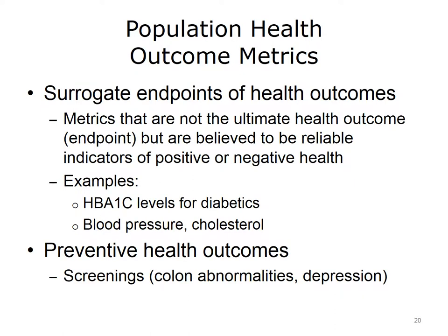A big issue with population health outcome metrics relates to the idea of surrogate endpoints of the ideal health outcomes. Surrogate endpoints are metrics that are not the ultimate health outcome or endpoint, but are believed or shown through evidence to be reliable indicators of positive or negative health outcomes. Some examples include the HbA1c level for diabetics, or blood pressure and cholesterol for other types of patients.